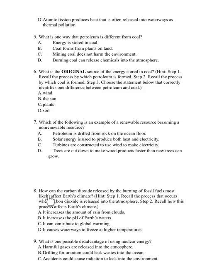Number 8. How can the carbon dioxide released by the burning of fossil fuels most likely affect the Earth's climate? Hint. Step 1. Recall the process that occurs when carbon dioxide is released into the atmosphere. Step 2. Recall how this process affects the Earth's climate. A. It increases the amount of rain from clouds. B. It increases the pH of the Earth's waters. C. It can contribute to global warming. D. It causes water waste to freeze at higher temperatures.